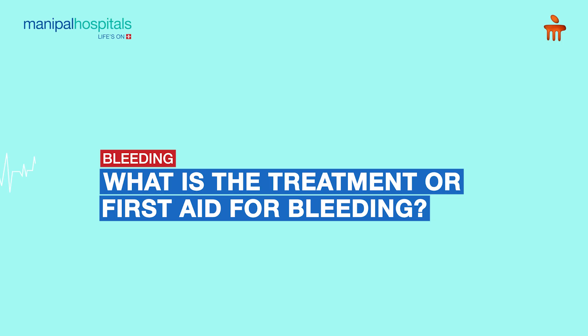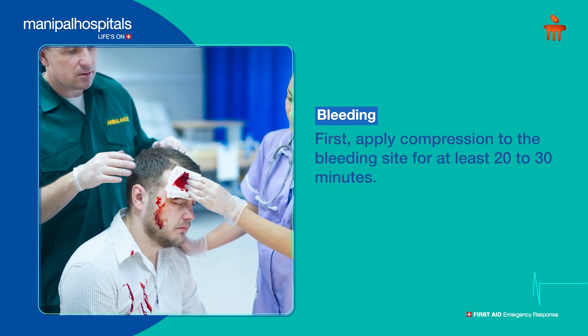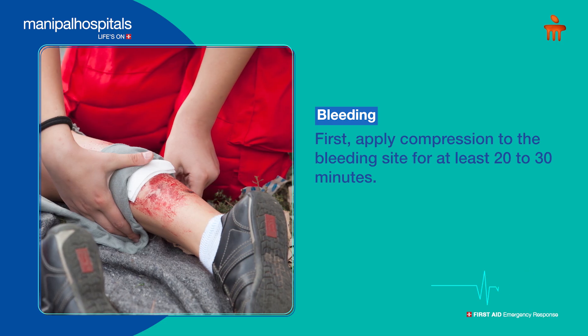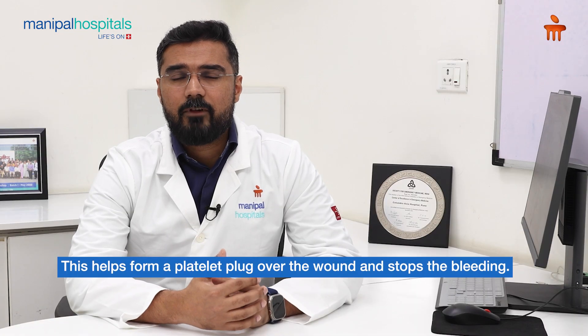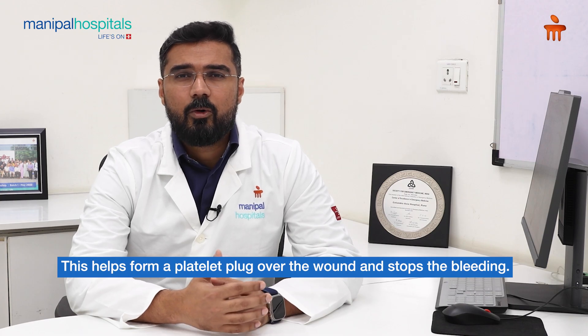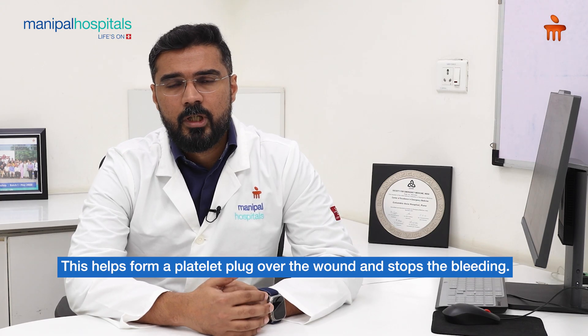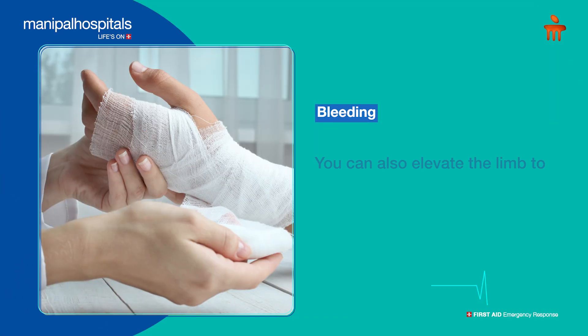For first aid in any case of minor bleeding, what you need to do is first give compression. Wherever on the body you find bleeding from any wound, you have to give good compression for at least 20 to 30 minutes, because we have clotting factors inside our blood. Once you apply pressure, the blood tends to form a platelet plug over the wound and the bleeding tends to stop on its own.